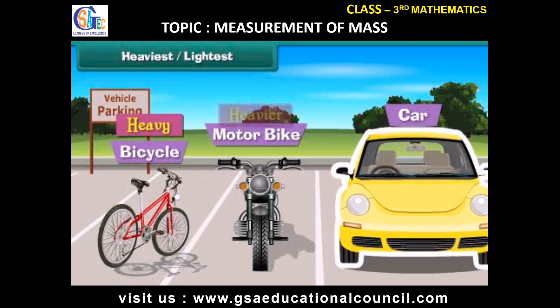Heavy, heavier, and heaviest are used to describe weights. We can also use light, lighter, and lightest to describe weights.